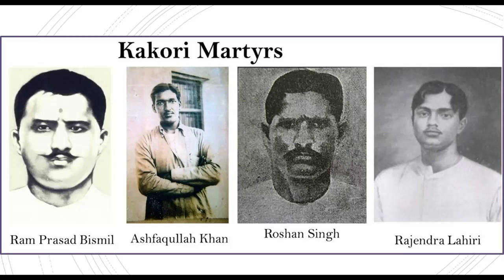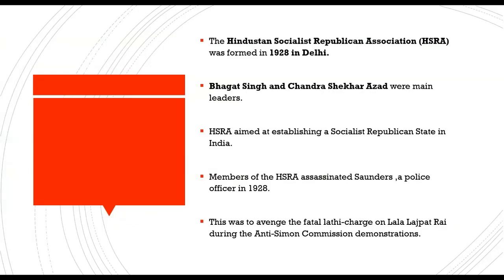Bhagat Singh and his comrades wanted to fight colonial rule and the rich exploiting classes through a revolution of workers and peasants. For this purpose they founded the Hindustan Socialist Republican Association, or the HSRA, in 1928 at Firuz Shah Kotla in Delhi. Bhagat Singh and Chandrasekhar Azad were the main leaders. The HSRA aimed at establishing a socialist republican state in India.